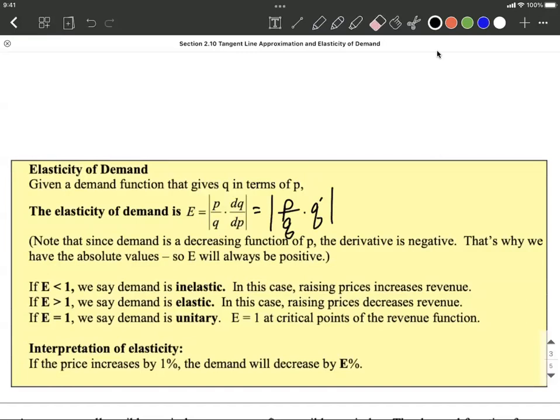To interpret this, after we get done, we make it positive with the absolute value. If that number that comes out is less than one, we call that inelastic, and we should raise our prices to increase our revenue.